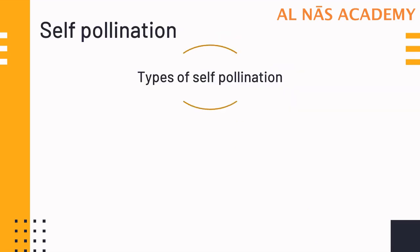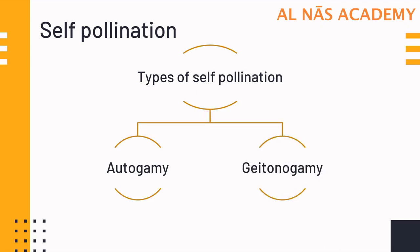Self-pollination is of two types: the first type is autogamy and the second type is geitonogamy. In self-pollination, the transfer of pollens to the stigma takes place in the same flower or the same plant. We will study them in detail when covering autogamy and geitonogamy.